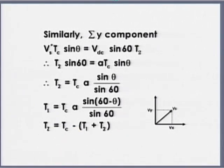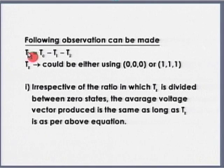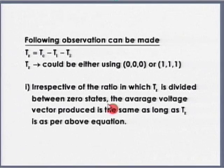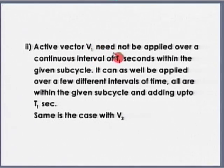Key observations: Tz is the zero voltage vector time; Tc is the sampling time divided by 2; T1 is the time V1 is applied; T2 is the time V2 is applied. Tz could be applied as 000 or 111 — it does not matter; it does not affect the volt-second balance. Also, V1 need not be applied over a continuous period; the total time for V1 must be T1 and the total time for V2 must be T2, but they need not be applied continuously.